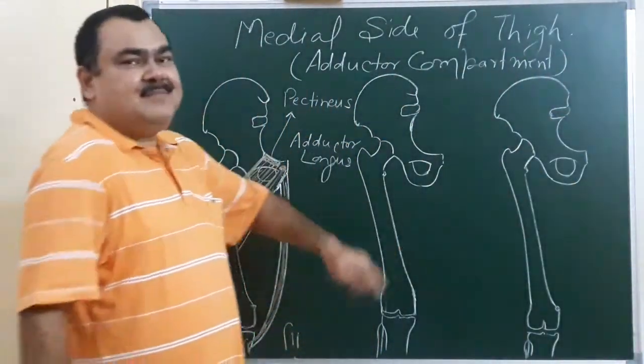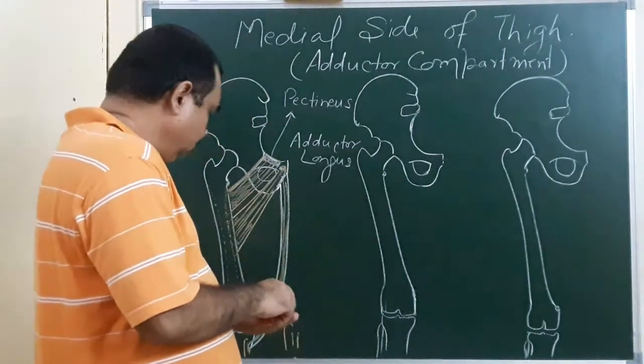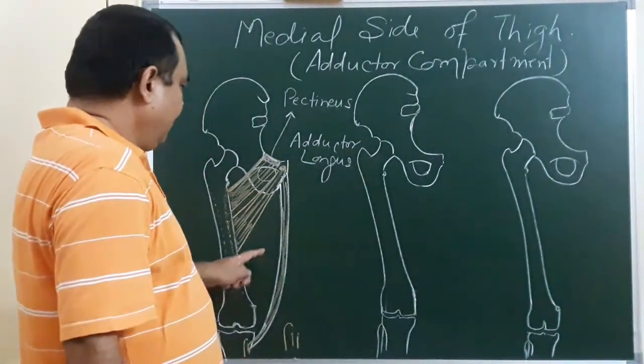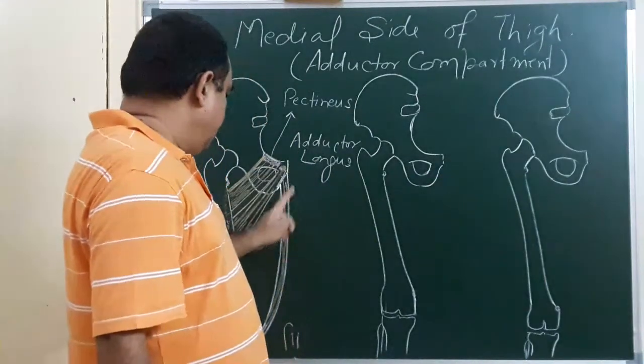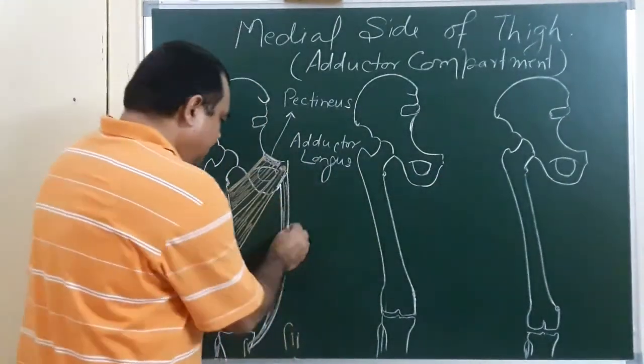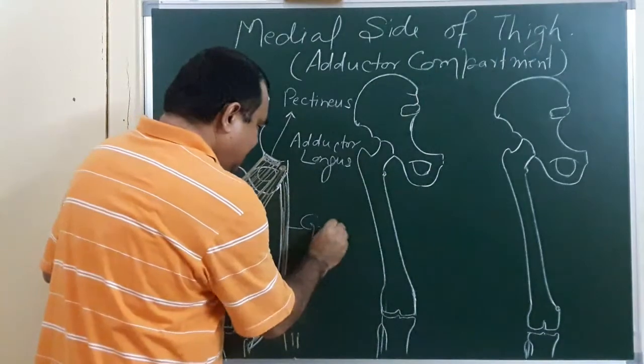Now, another muscle. You have seen three muscles. This is gracilis.